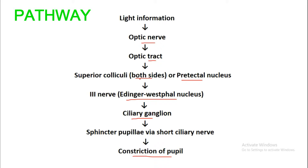That is the pathway of the direct and indirect light reflex — both eyes will show constriction of the pupil. If we pass light rays in one eye or both eyes simultaneously, there will be constriction of the pupil on both sides, because the optic tract goes to the superior colliculi on both sides via the pretectal nucleus.